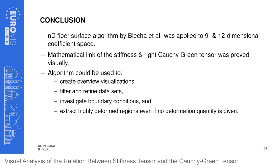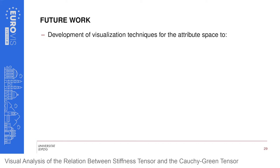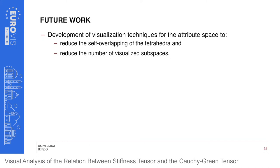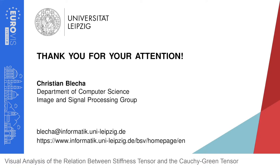To conclude, we applied our n-dimensional fiber surface algorithm to a 9-dimensional and a 12-dimensional coefficient space built from the stiffness tensor coefficients and principal values of the right Cauchy-Green tensor. We visually proved the mathematical link between these two tensors and showed the algorithm can also be used to create overview visualizations, filter and refine datasets, investigate boundary conditions, and extract highly deformed regions even if no deformation quantity is given. For future work, new visualization techniques could address self-overlapping of tetrahedra in the attribute space and reduce the number of needed subspace visualizations.